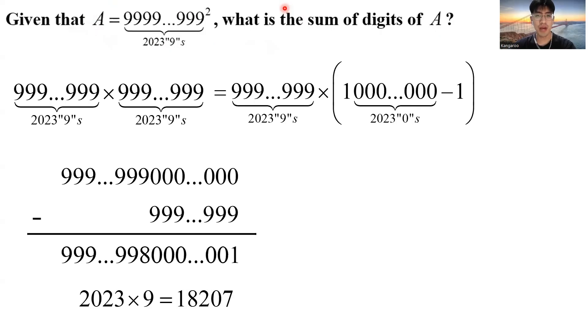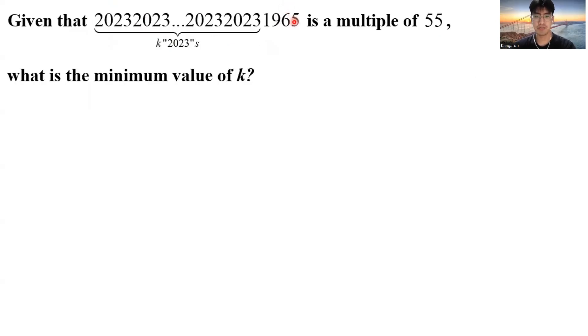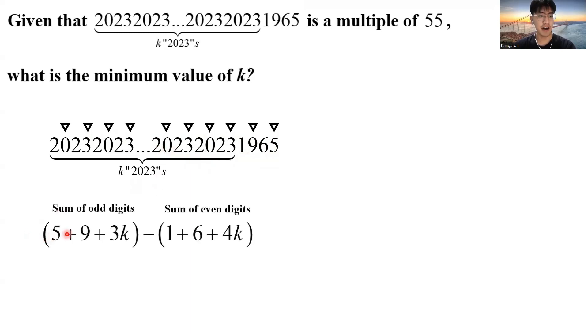Let me remind you, how would I know if a number is a multiple of 11? I simply take the sum of all the odd digits, 5, 9, 3, 0, 3, 0, and it goes on, minus the sum of all the even digits, 6, 1, 2, 2, 2, 2, 2. I can express this as 5 plus 9 plus 3k, because for each 2, 0, 3, there's 1, 3, and there are k, 2, 0, 23.